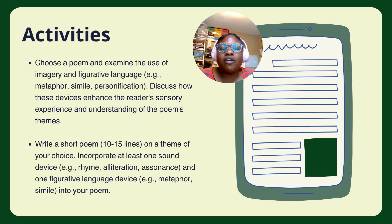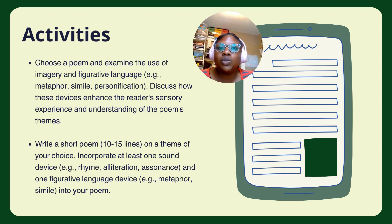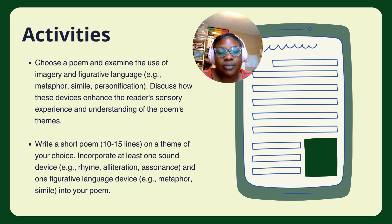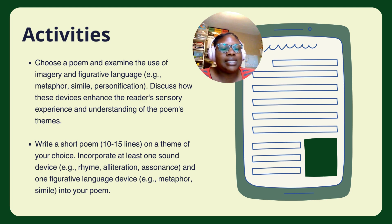There are two activities to work on. The first activity: choose a poem — any poet that is your favorite will do. Examine the use of imagery and figurative language, for example, metaphor, simile, and personification. Discuss how these devices enhance the reader's sensory experience and understanding of the poem's themes. Remember, you are the reader in this activity, so how are these devices enhancing your sensory experience and helping you understand the poem's themes?